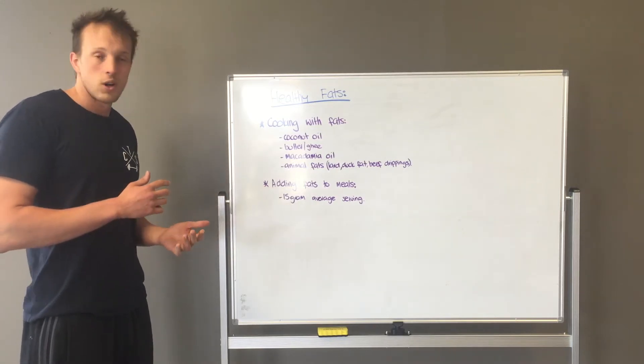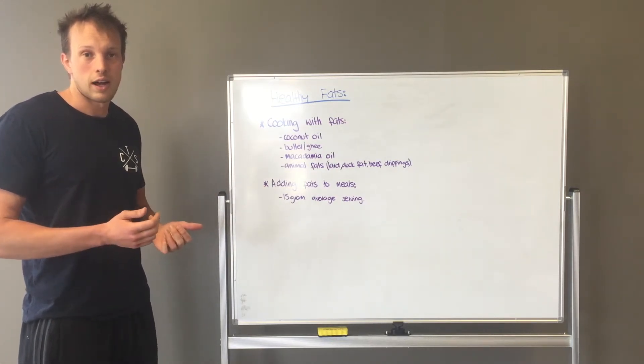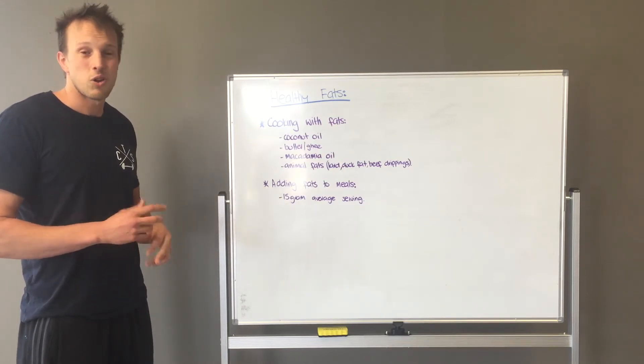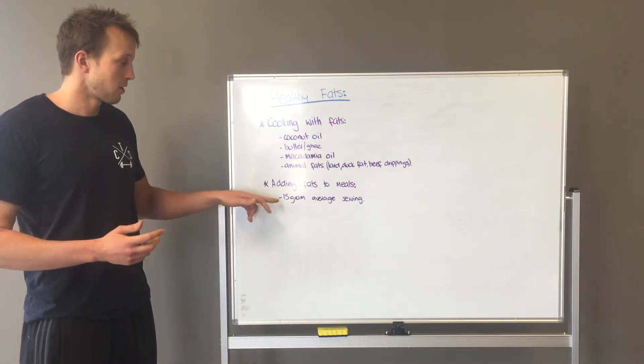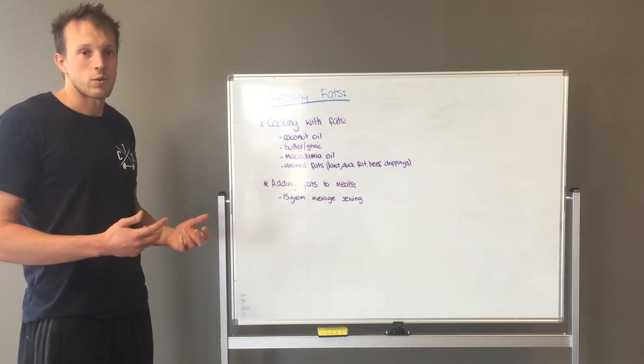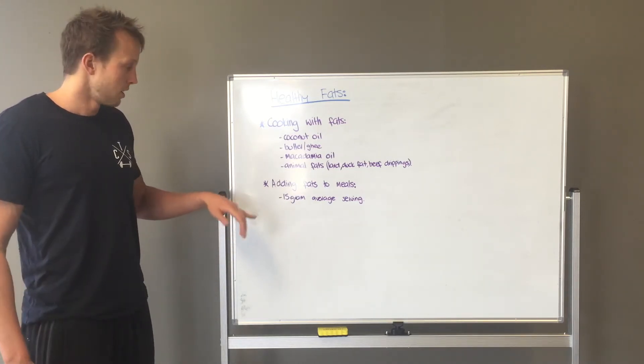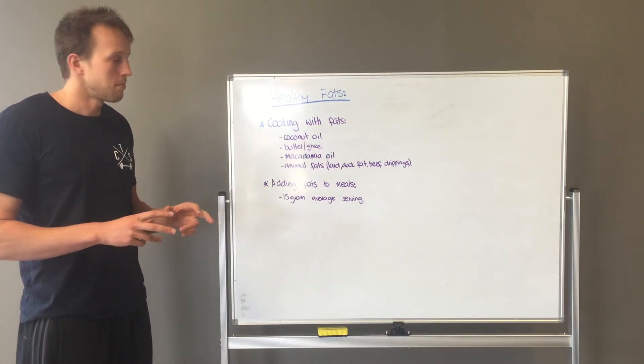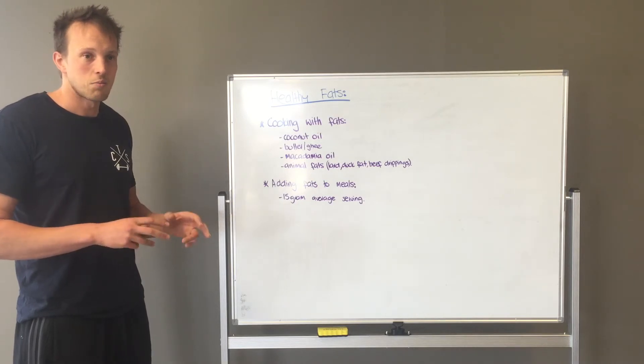That's pretty easy. So one tablespoon of oil, any oil is going to be about 15 grams. 30 grams of nuts is going to give you about 15 grams of fat. And then about 100 grams of avocado, which is most of the time about half an avocado, is going to give you 15 grams of fat as well. So it's pretty easy just to eyeball and measure that amount and get in your meals.